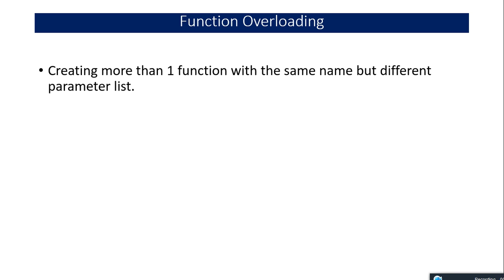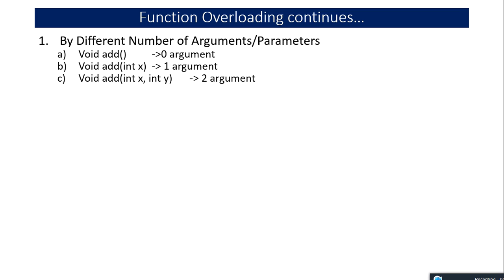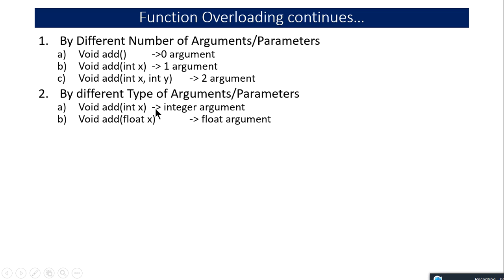In function overloading, we create more than one function with the same name but different parameter list. The function definition is selected based on the arguments passed. Function overloading can be achieved in two ways: first, by changing the number of arguments — for example, a function 'add' with zero arguments, then one integer argument, then two integer arguments. All these functions will work without any redefinition error.